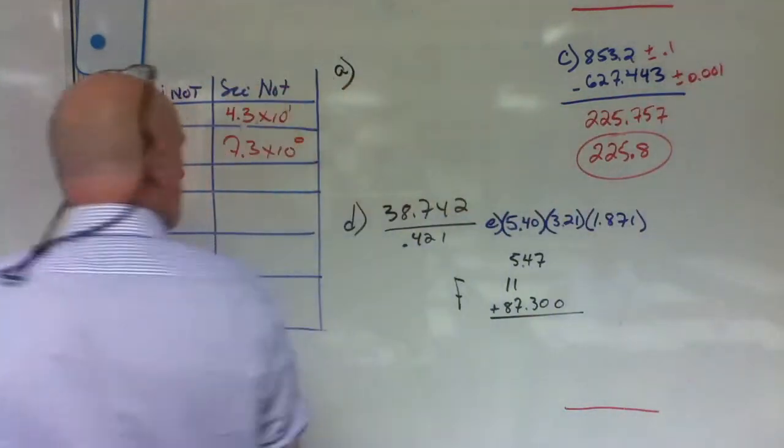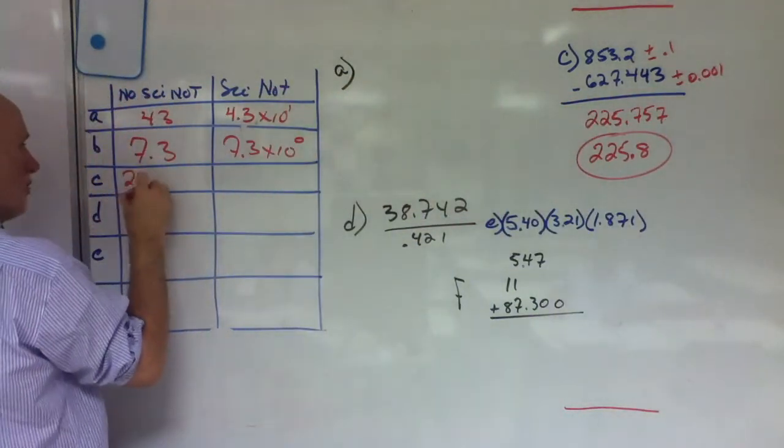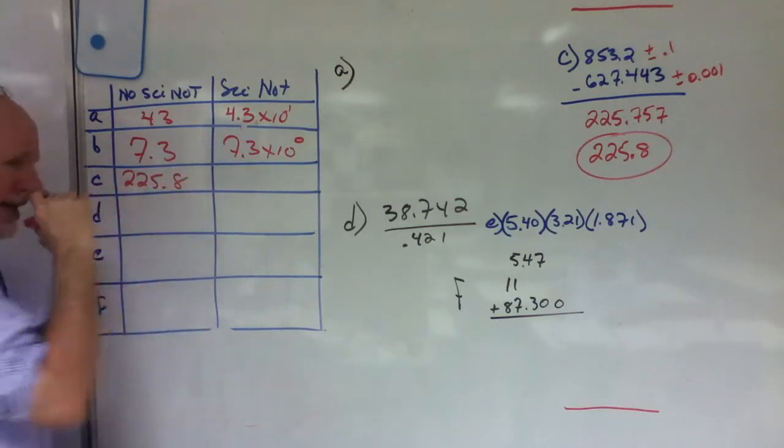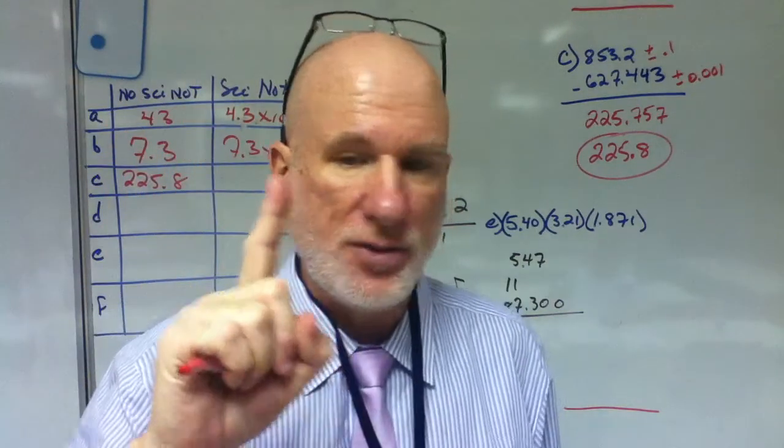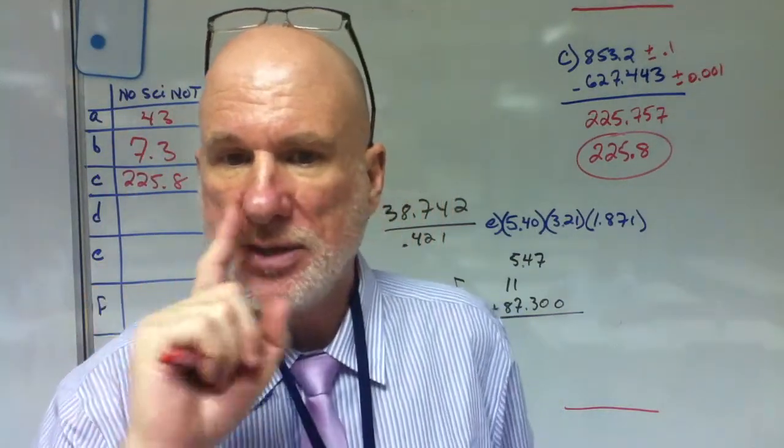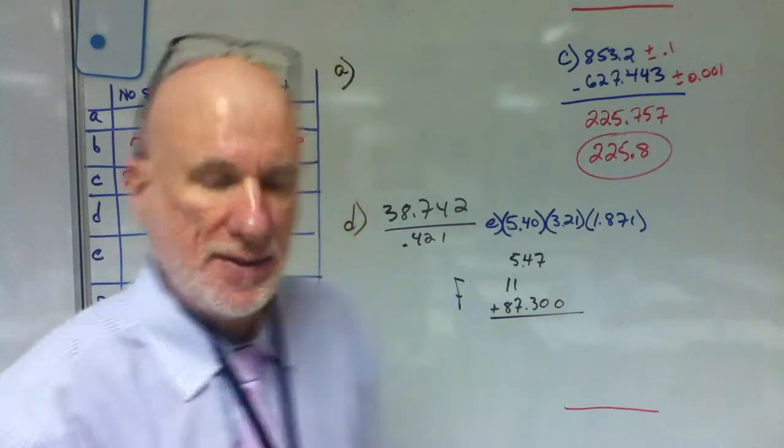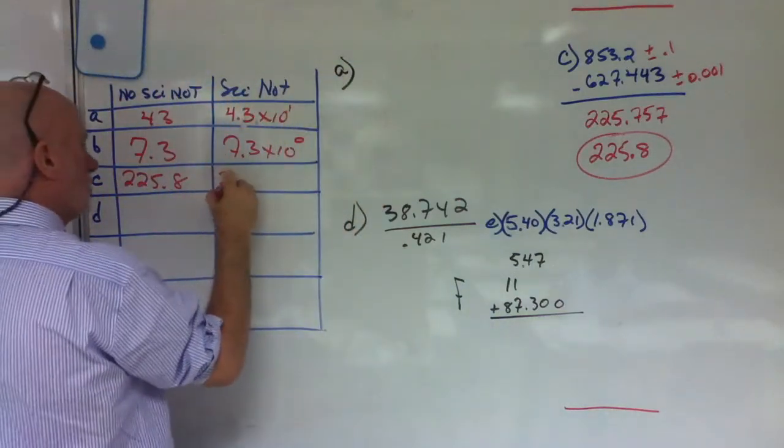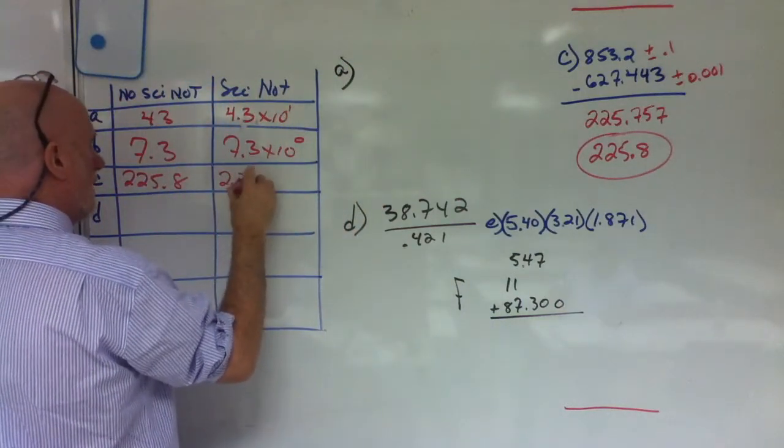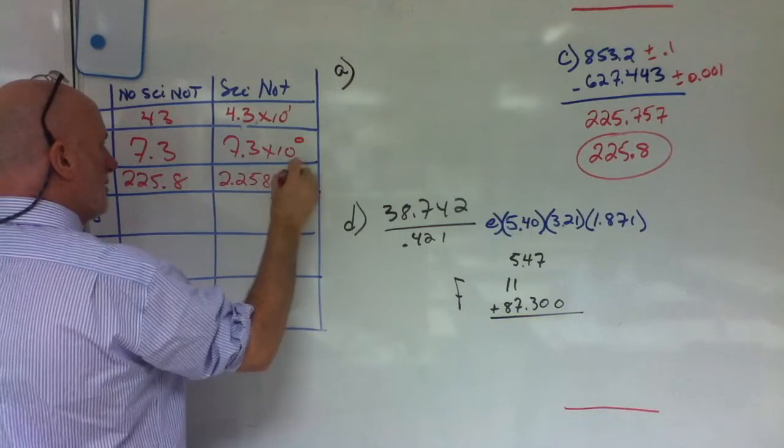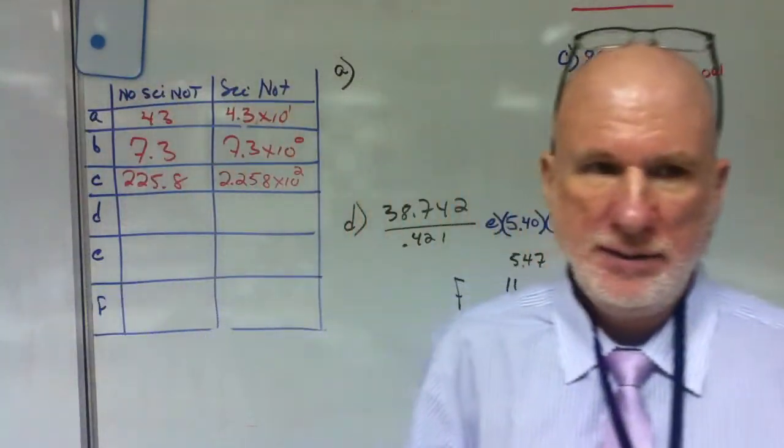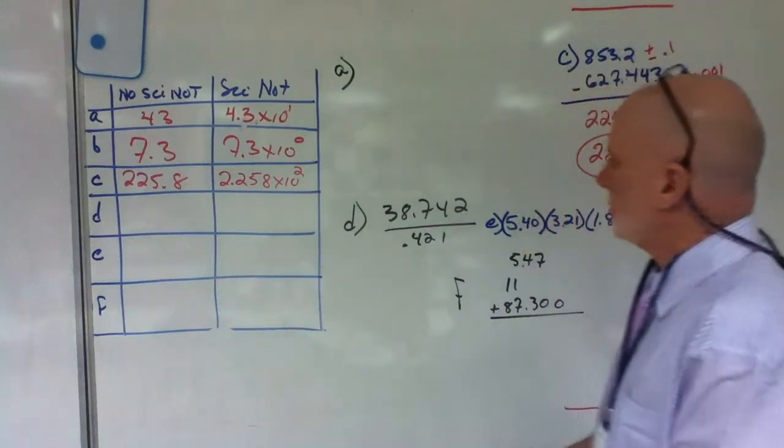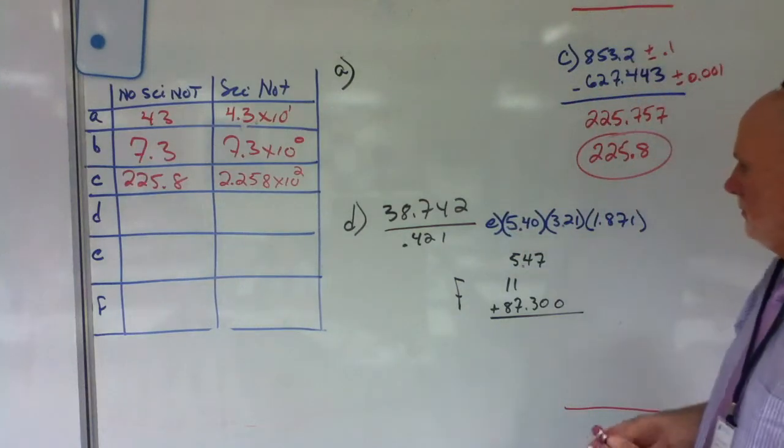Now, how do I write 225.8 in scientific notation? Remember, you can only have one significant figure to the left of the decimal in scientific notation, correct? So how do I write that? 2.258 times 10 to the 2. Correct? You guys are good. Easy? Shall I erase that one as well?